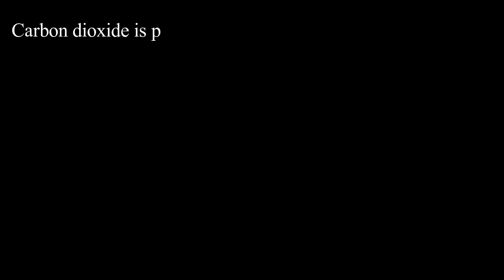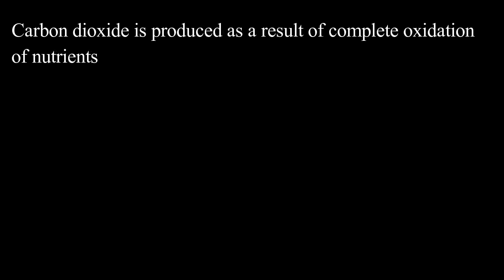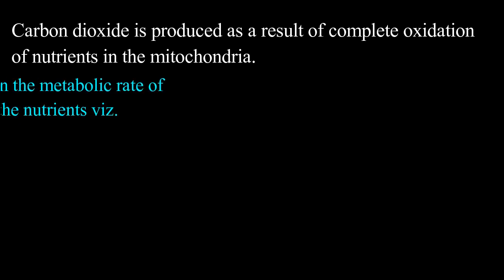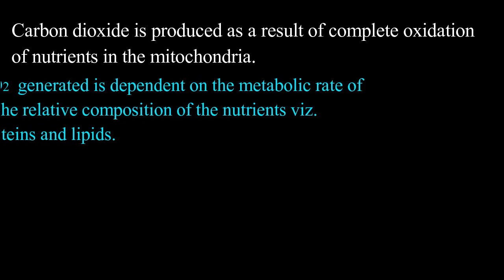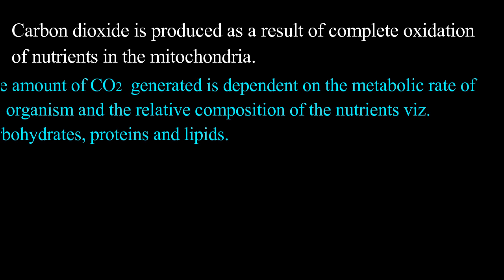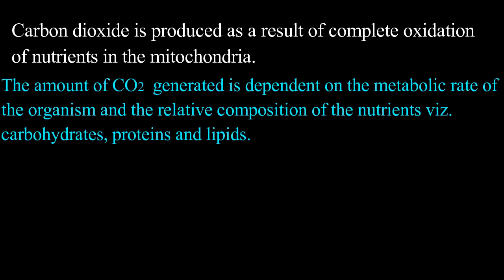The carbon dioxide is produced as a result of complete oxidation of nutrients in the mitochondria of the cell. The amount of carbon dioxide generated is dependent on the metabolic rate of the organism and the relative composition of the nutrients like carbohydrates, proteins, and lipids.